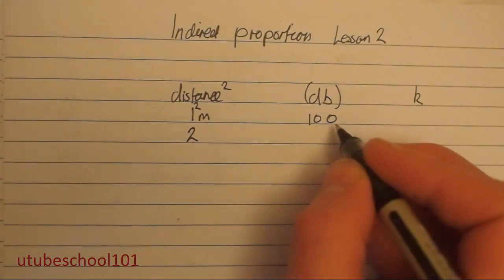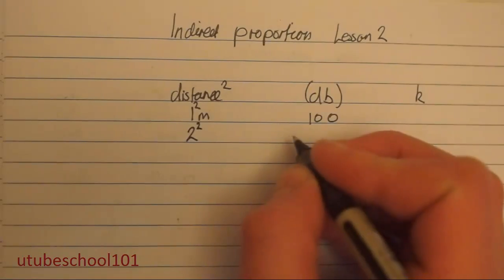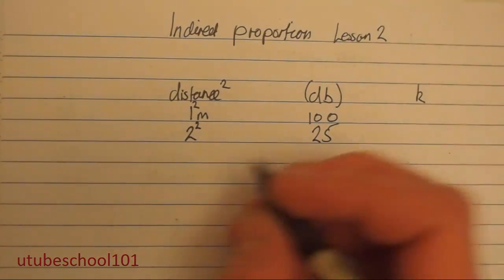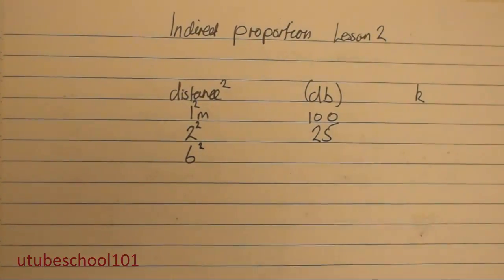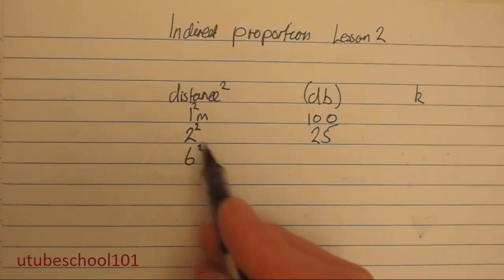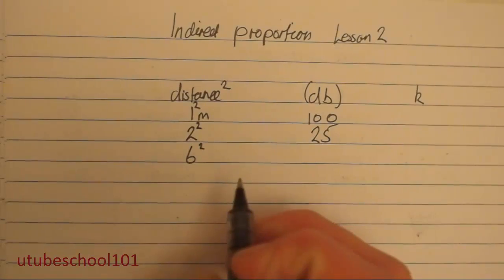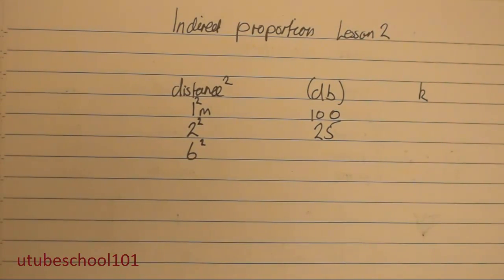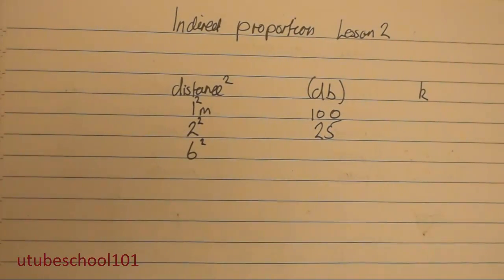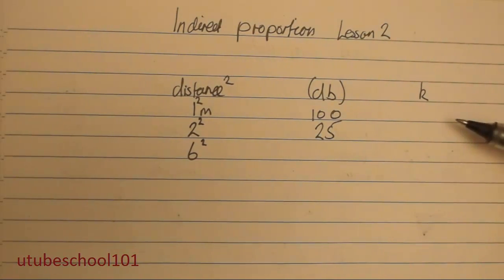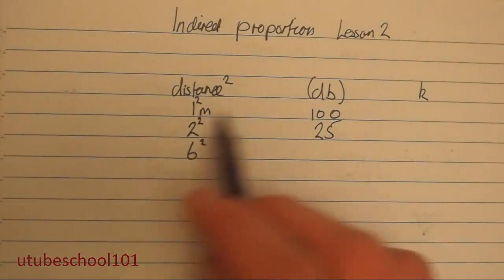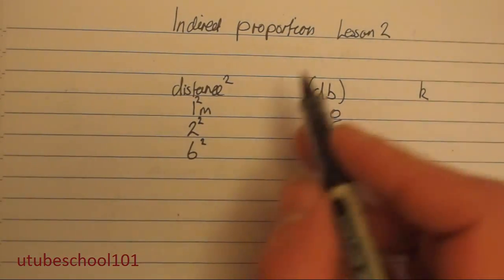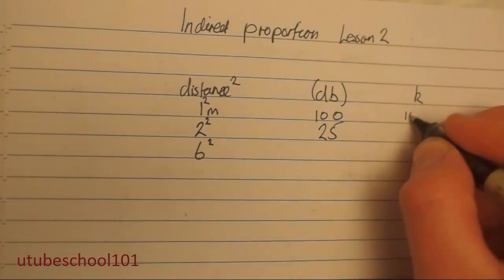So the distance is going to be squared before the value. Two squared is going to equal four. So the decibels here is going to be 25. Here's going to be my problem: the builder has moved six meters away from the classroom, and we're going to have to work out what the decibel level is. First of all, we have to work out k. In indirect proportion, k is these values multiplied. One squared is 1, multiplied by 100 is going to be 100. So k is 100.